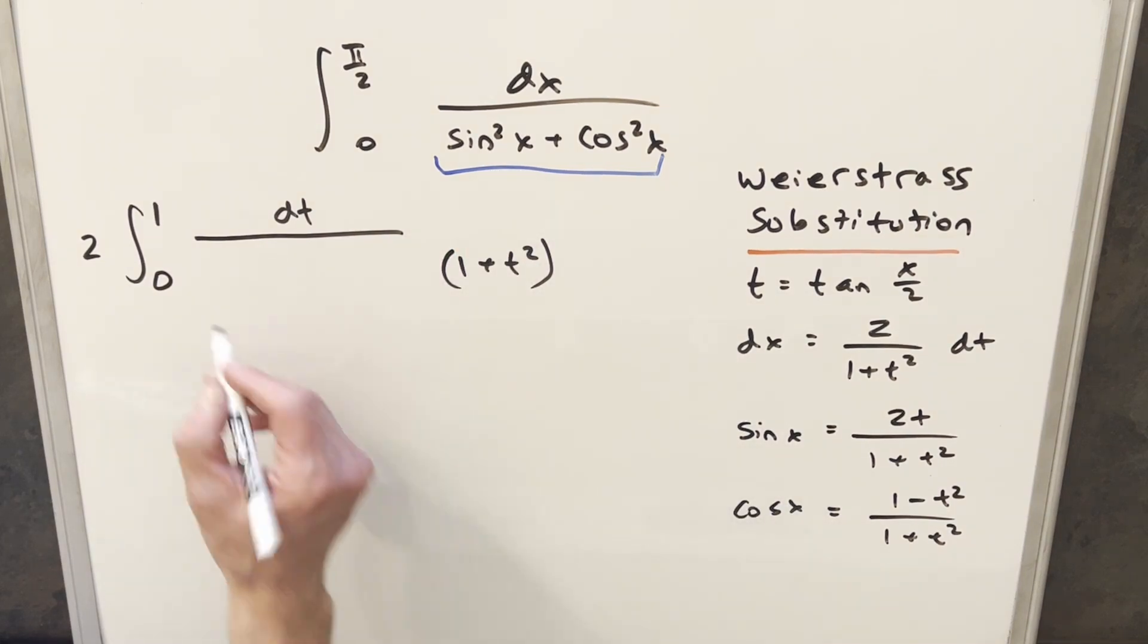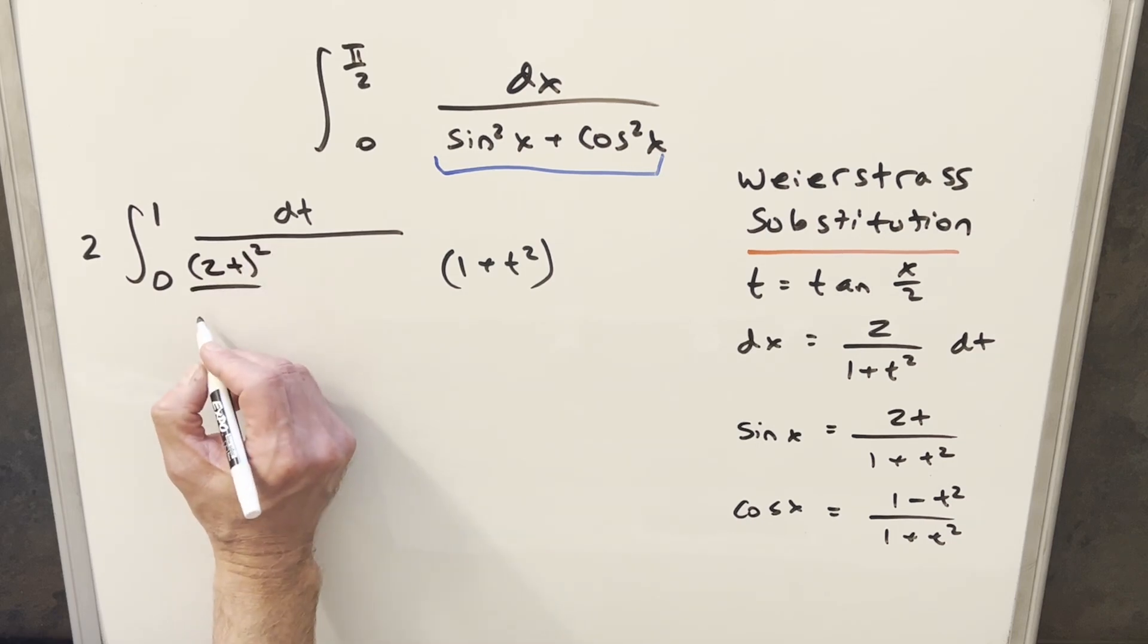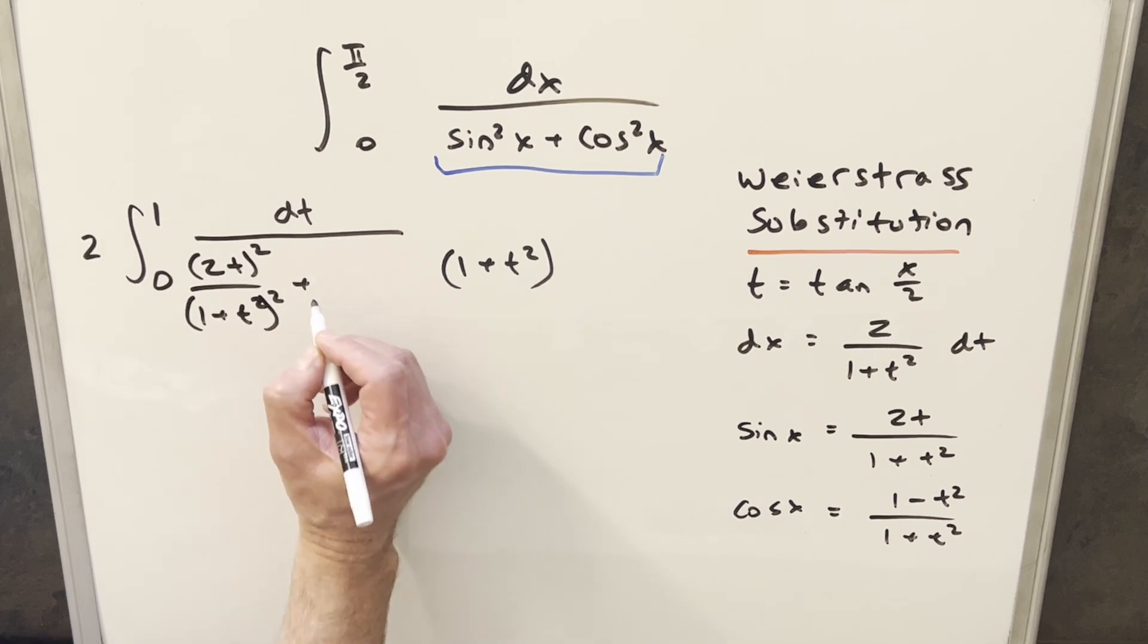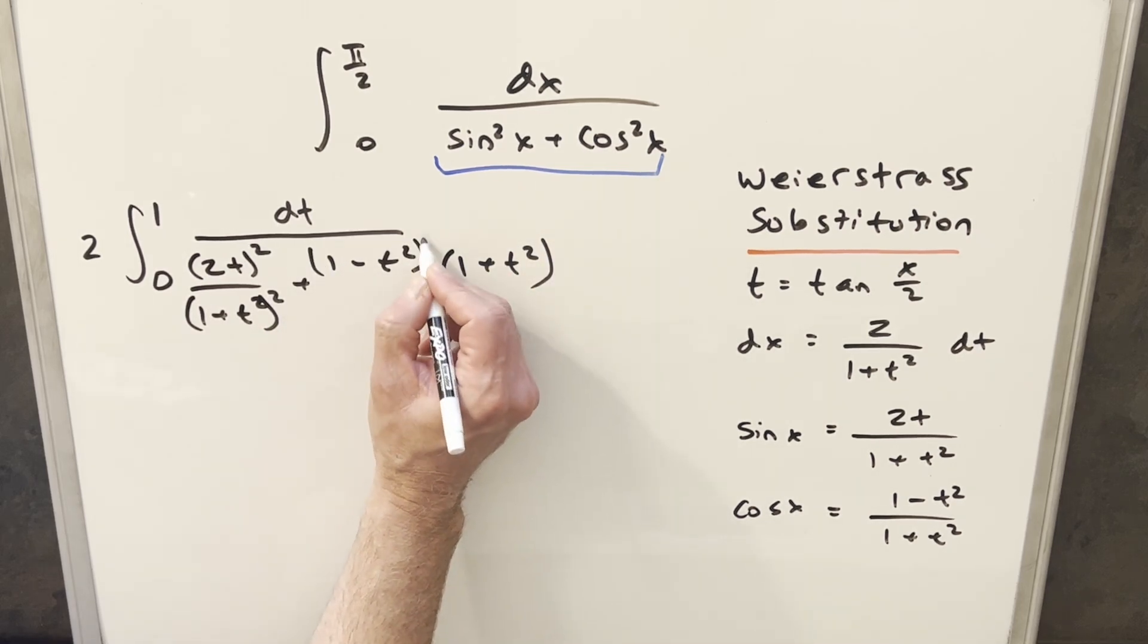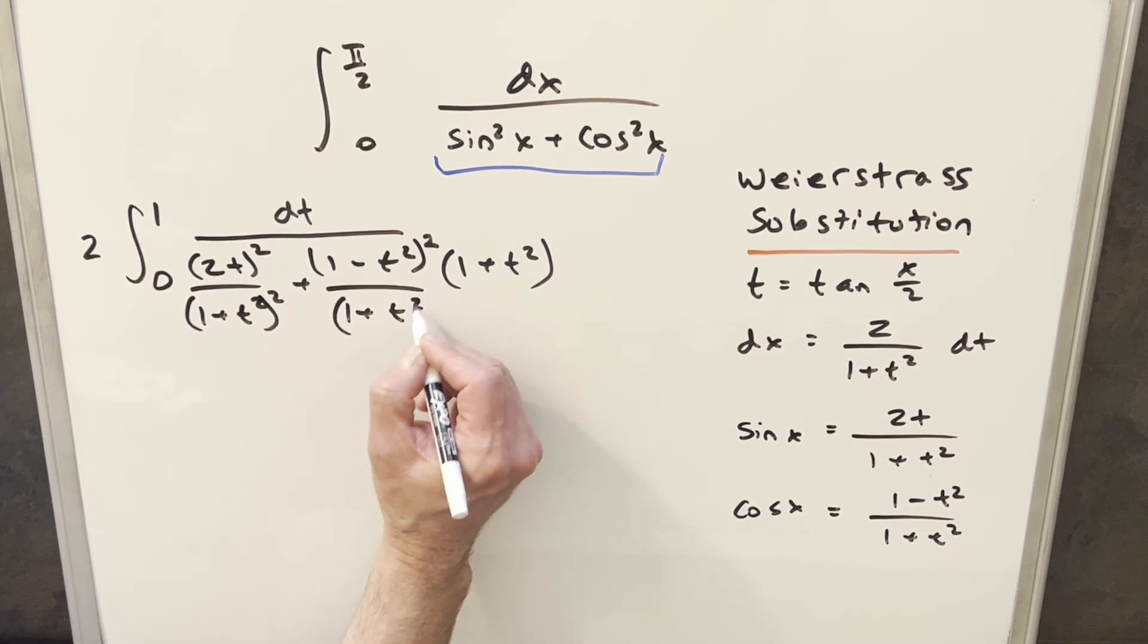For sin² we've got a value for sine here. I'm going to split this up. We'll write 2t² here over this 1 plus t². This will need to be squared. And then here for cosine, same kind of thing. We're going to have 1 minus t². We'll have this squared. And then we're going to have our 1 plus t² all squared.